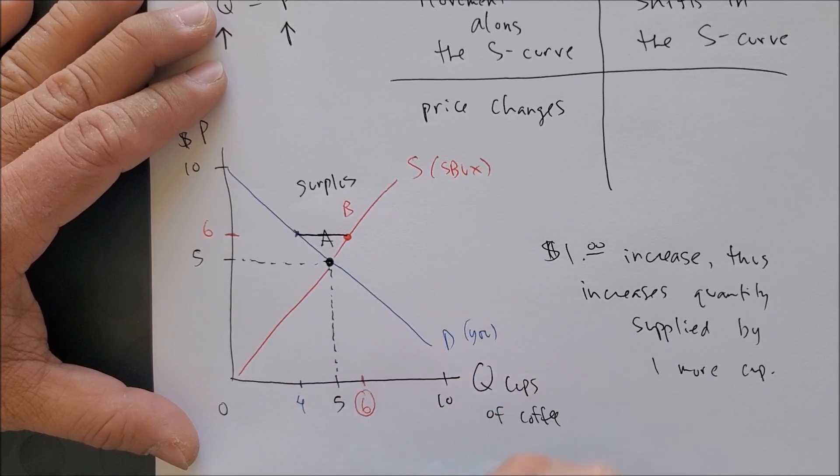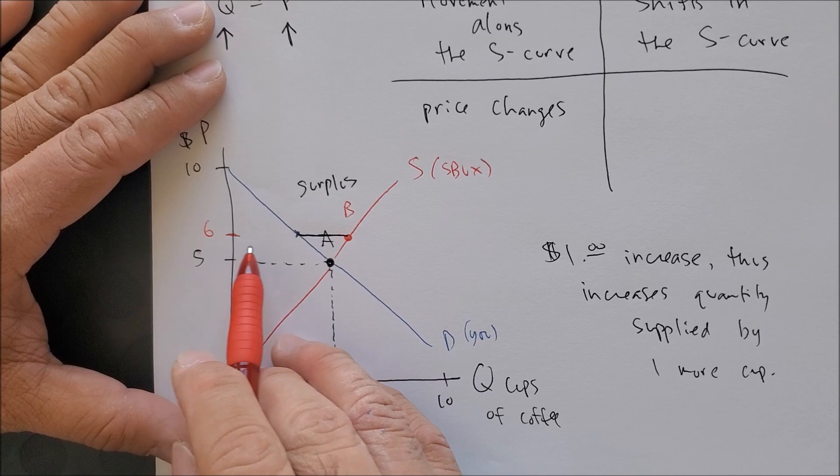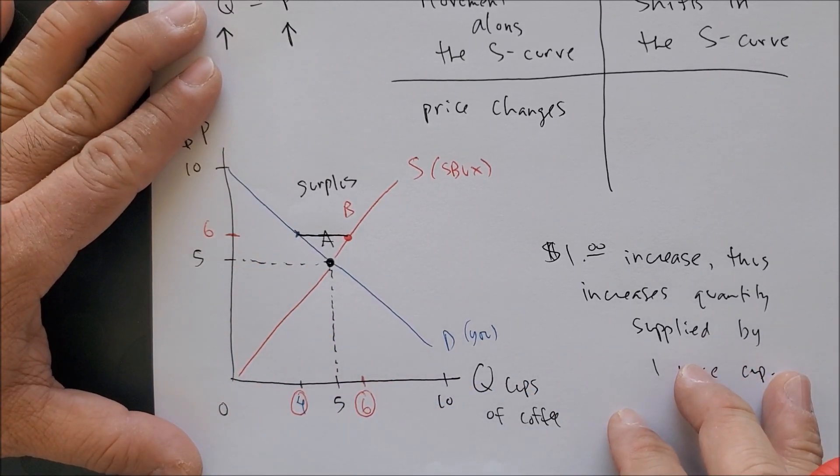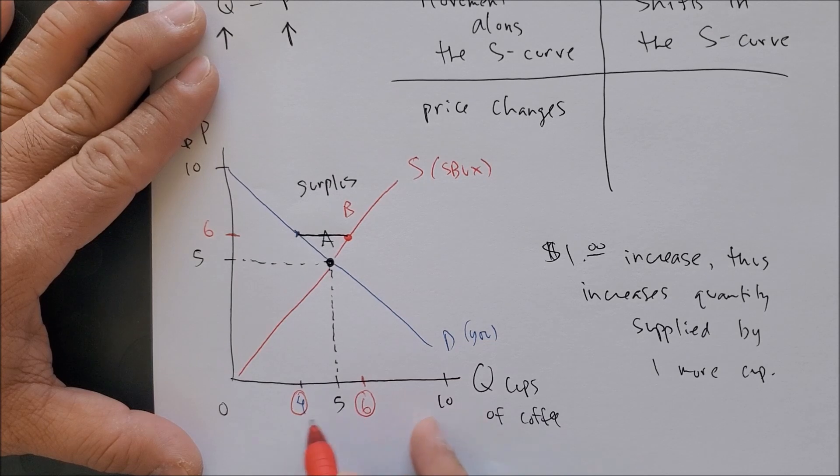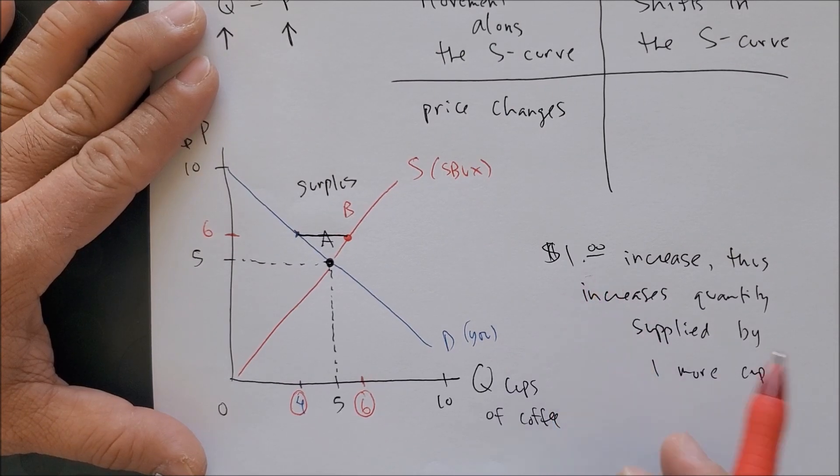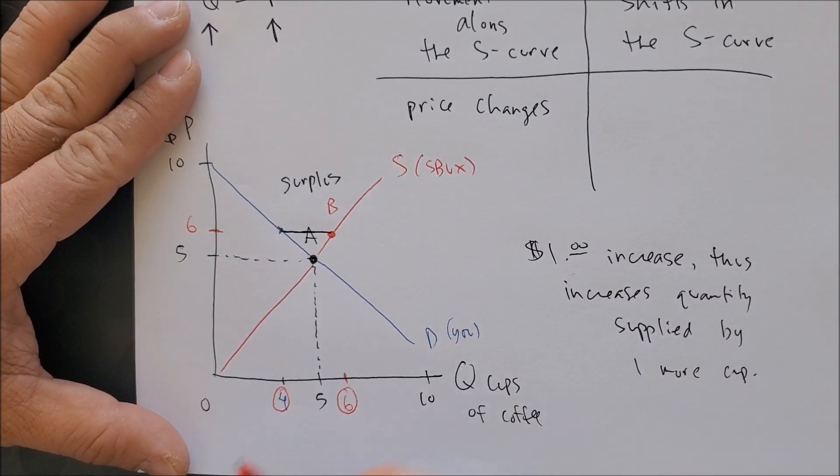At point B, producers are happy - six dollars, they produce six cups of coffee. But at six dollars, consumers are now going to consume less, just four. So there is an excess of two cups of coffee in the economy - excess cups of coffee that nobody wants to purchase. Why not? Because it's too expensive.